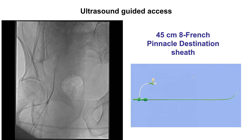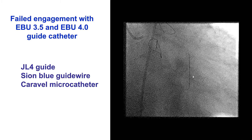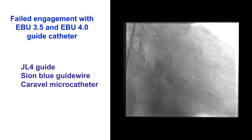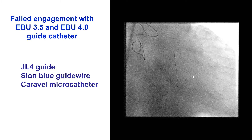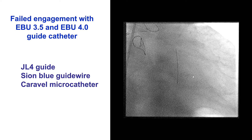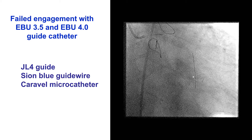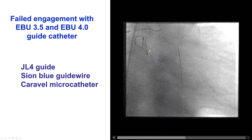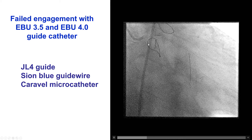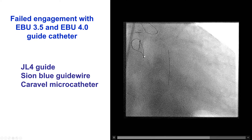Given the complexity of the lesion, we obtained femoral access with a 45 cm long 8 French Pinnacle Destination sheath. However, we had significant difficulty engaging the lesion. We were unable to engage despite using an EBU 3.5 and an EBU 4.0 guide catheter. As you can tell from the image quality, the patient was fairly large, requiring higher radiation dose and less angulated views.